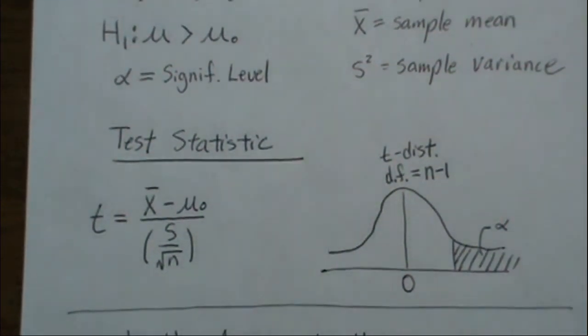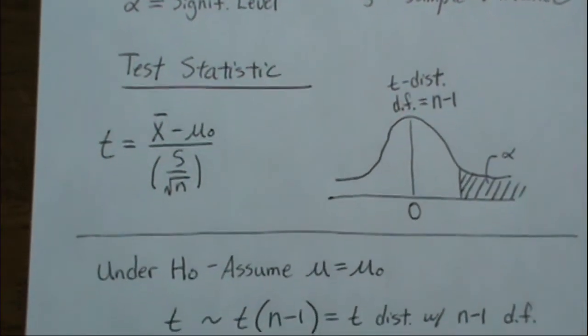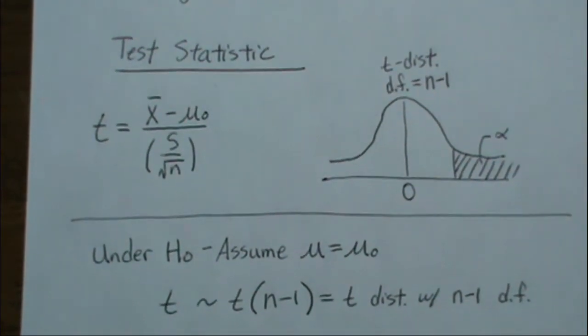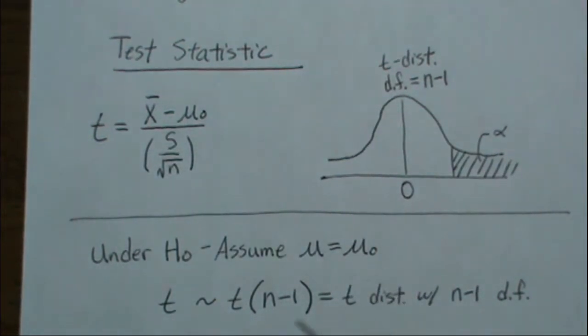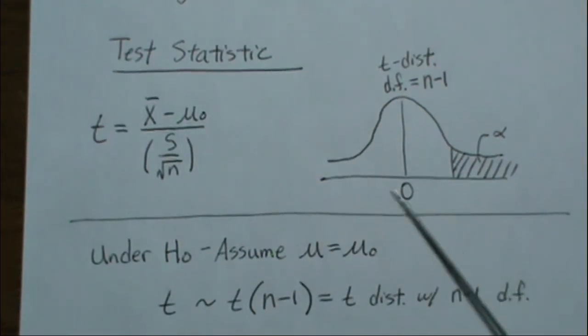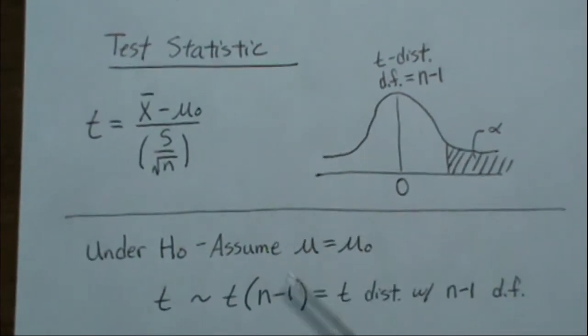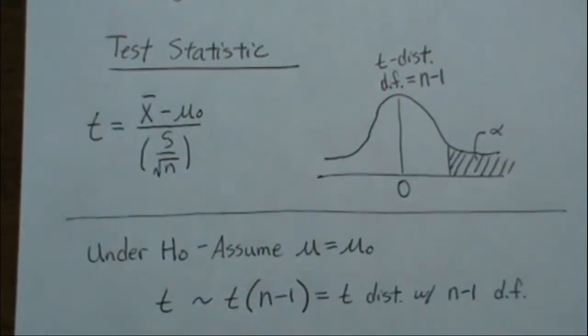Now, one note: under the null, meaning the true mean is μ₀, our test statistic is what's called a central t-distribution with n-1 degrees of freedom, and that's what this curve represents. It's a t-distribution, and we find where the test statistic falls.